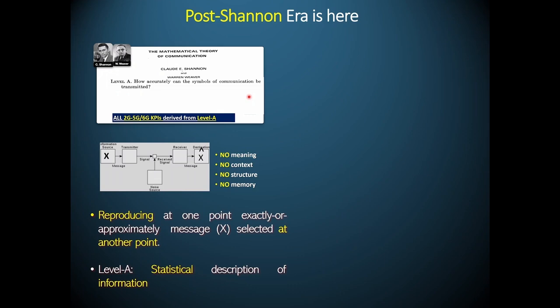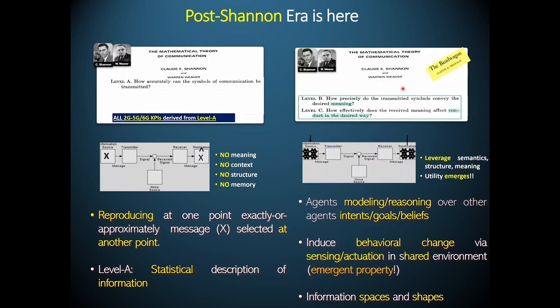Now, although Shannon himself warned us against using this type of information, because this is not information that biological systems use. There are two levels, level B and level C, which is about extracting meaning from data. And that's what you communicate to the receiver. The receiver understands the meaning of your message and then tries to carry out a task. So this is what we are now working on under the umbrella of semantic communication, which is boiling down to how agents can really model and reason over other agents in the environments, intents, goals and beliefs via interaction. So now information is no longer a scalar, as was the case in level A, but is living inside a what we call information space. So it has certain topology and shapes which we are trying to now characterize.